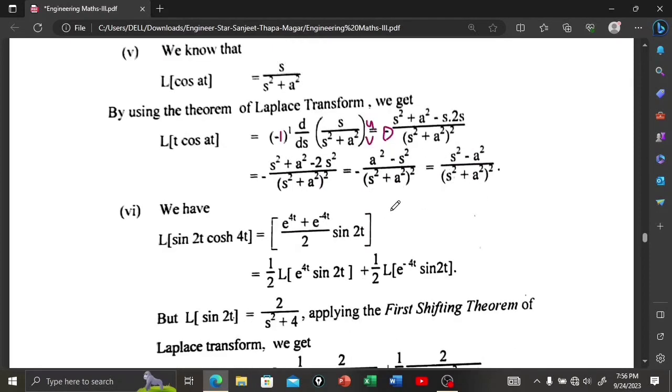By UV rule, it is v as it is, that is s² plus a², and derivative of u. Derivative of s with respect to s is simply 1, minus s as it is, and derivative of this with respect to s.